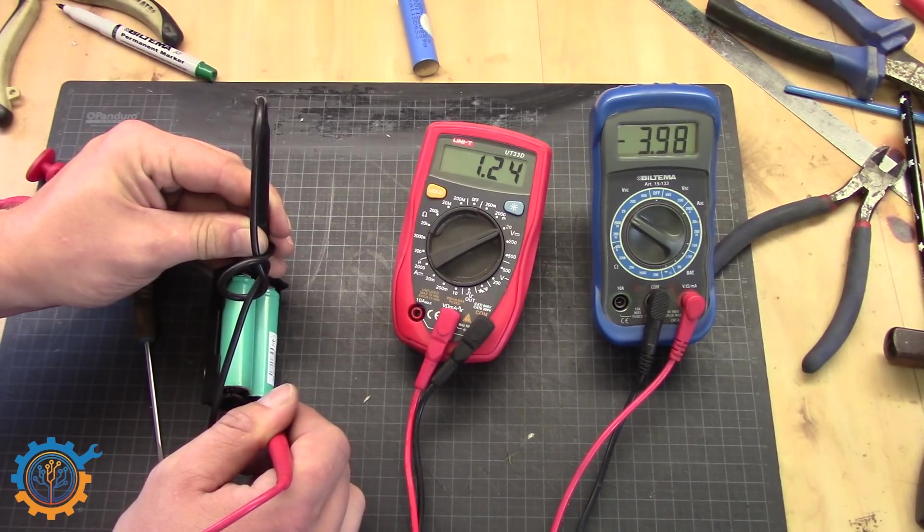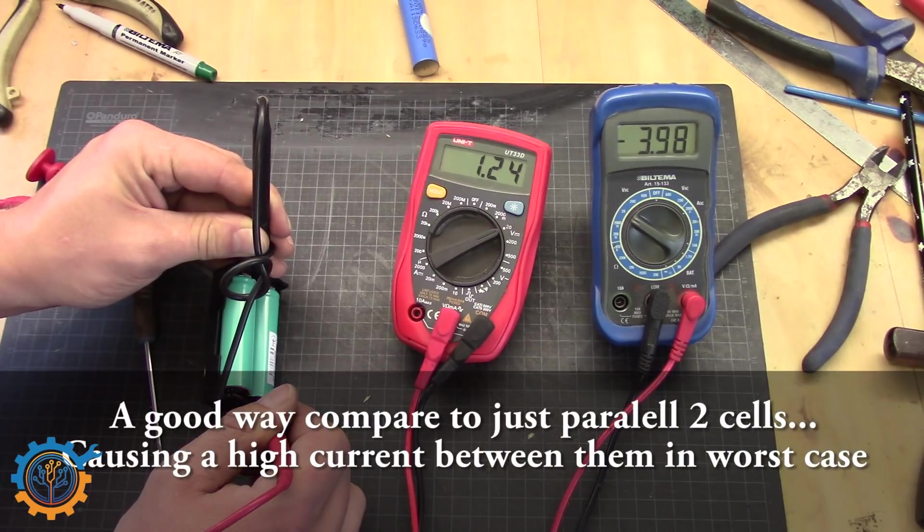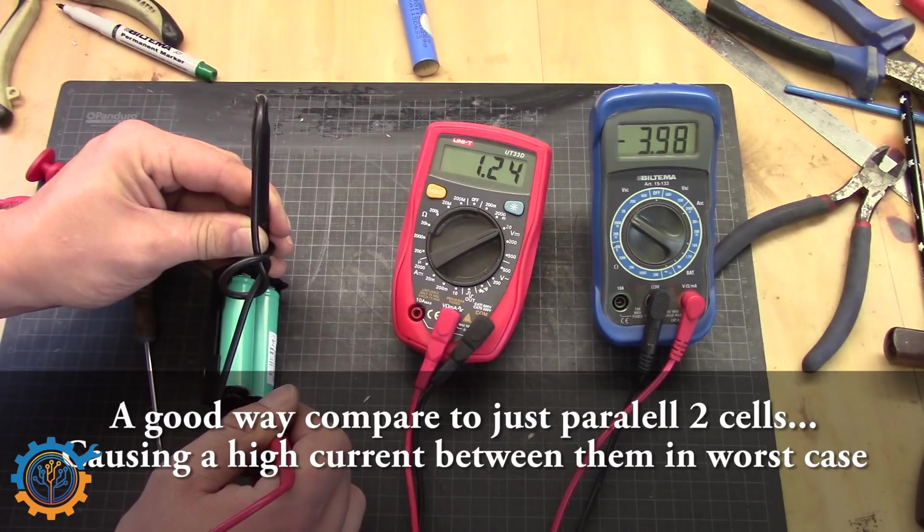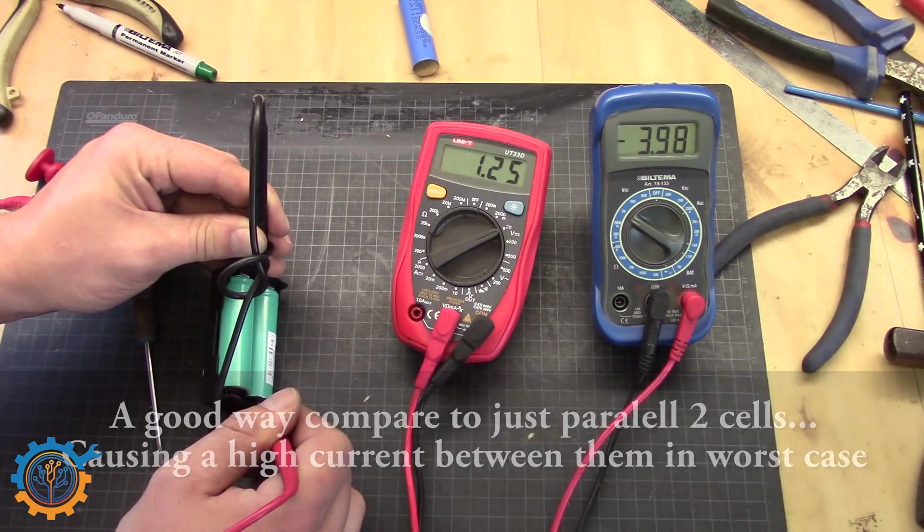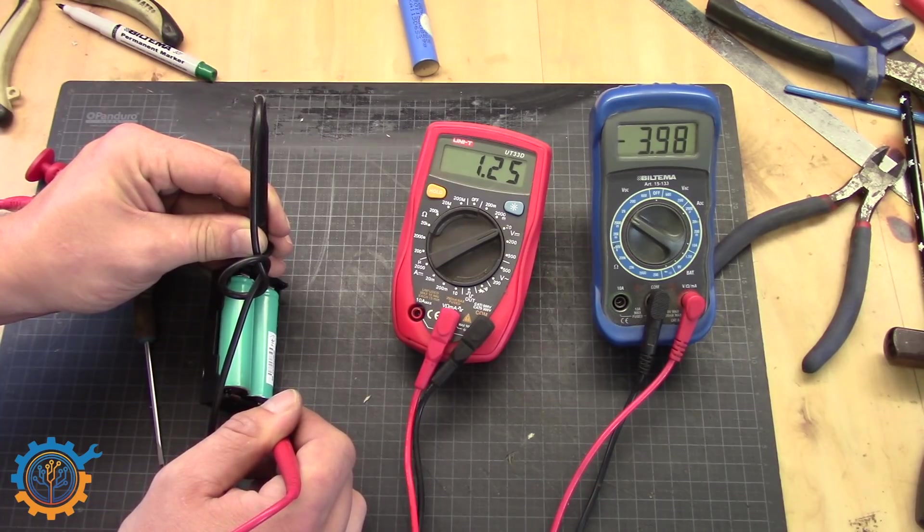So a slow charge. Not causing any issues to neither of the cells. And this is important. And it's very simple to create this as well. So if you want to do that. Check out the links below. For what type of gear you need to buy.